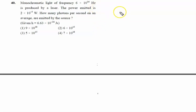Monochromatic light of frequency 6×10^14 Hz is produced by a laser. The power emitted is 2×10^-3 Watt. How many photons per second on average are emitted from the source? That is, number of photons per unit time we have to calculate.